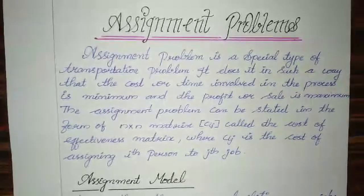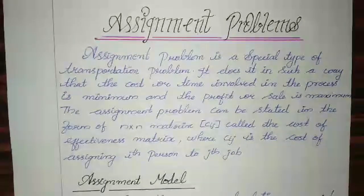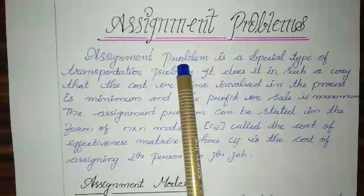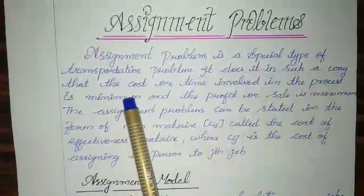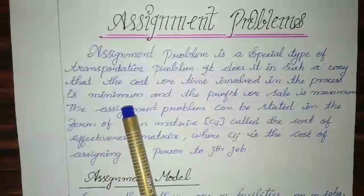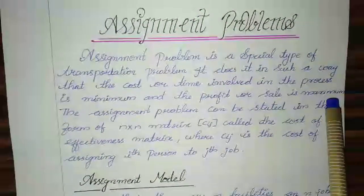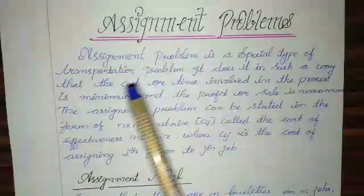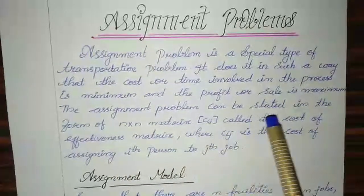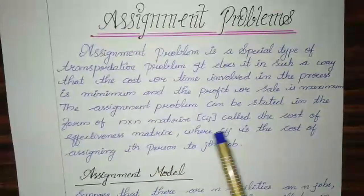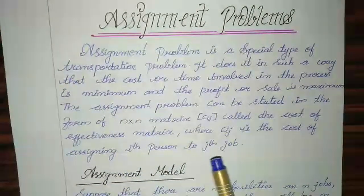Hello friends, in this video we are going to discuss the assignment problem by the Hungarian method. The assignment problem is a special type of transportation problem. It is designed such that the cost or time involved in the process is minimum and the profit or sale is maximum. The main objective is to assign jobs to the right operator such that total processing time is minimized. The assignment problem can be stated in the form of an n×n matrix called the cost-effectiveness matrix, where C_ij is the cost of assigning the i-th person to the j-th job.